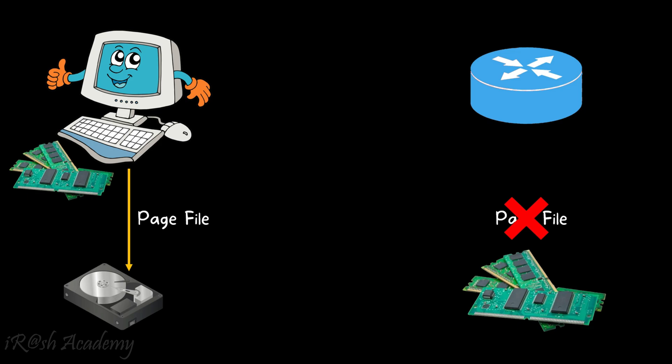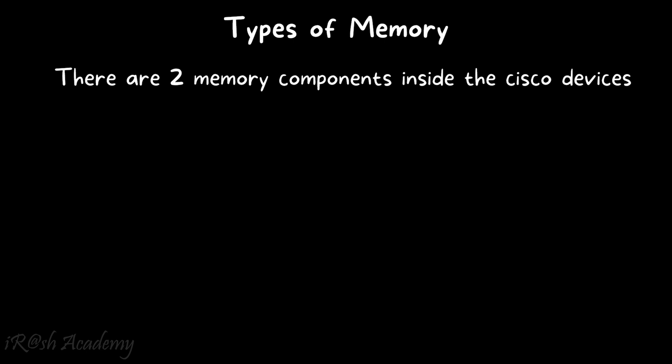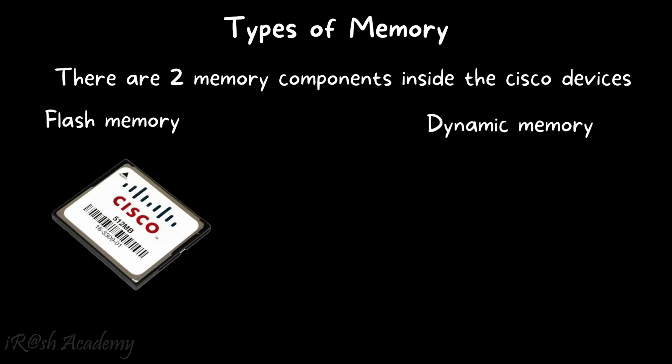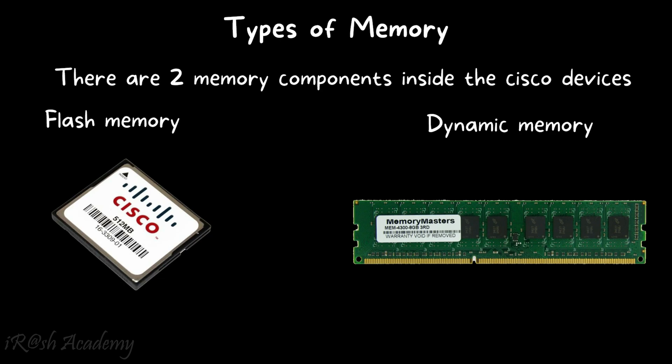When using any Cisco device — whether a router, switch, or any other device — we need to use a dedicated memory module, depending on the version of the operating system and the features being used. There are two types of memory components available inside Cisco devices: one is flash memory and the other is dynamic memory.